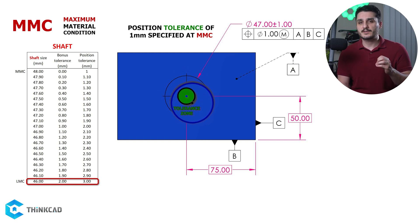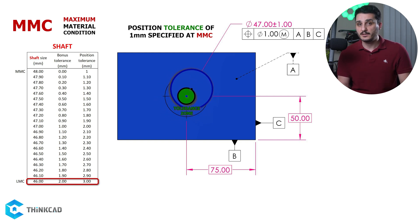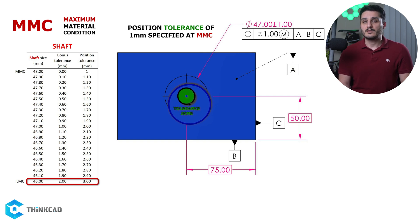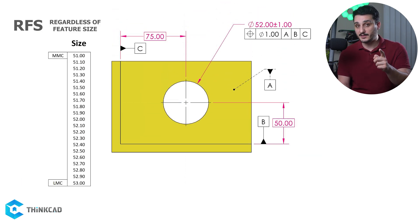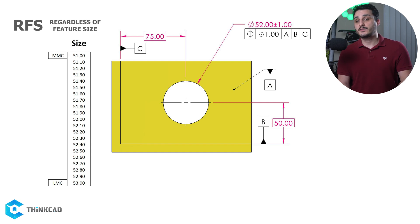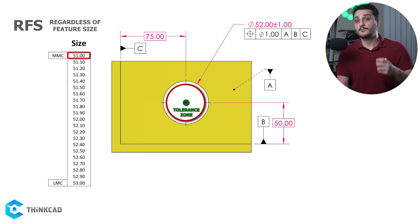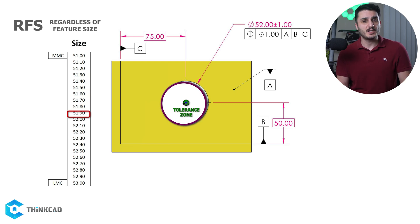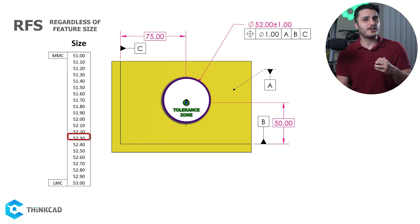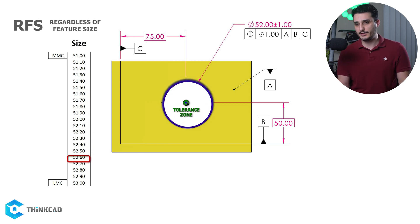Now let's go over our other part which has a hole in it. At RFS, or regardless of feature size, we have the same 1 mm of position tolerance for all size possibilities, which is the default GD&T condition.